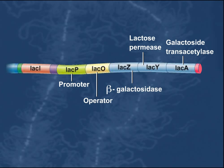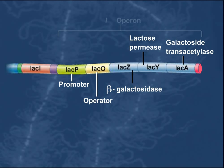The unit consisting of the LAC-P promoter, LAC-Operator, and the LAC-Z, LAC-Y, and LAC-A genes is called the LAC Operon.